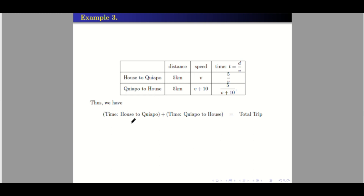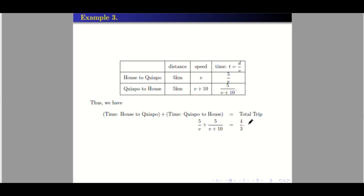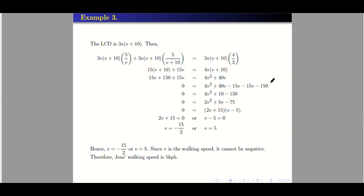Thus, the time from house to Quiapo plus the time from Quiapo to house equals the total trip time. So we have: 5 over V plus 5 over (V plus 10) equals 4/3. The LCD is 3, V, and (V plus 10) since all are distinct and non-factorable. Distributing the LCD to each fraction: we can cancel V in the first term to get 5 times 3 equals 15, times (V plus 10). Cancel (V plus 10) in the second term to get 5 times 3 equals 15V. On the right side, cancel the 3 to get 4 times V times (V plus 10), which equals 4V(V plus 10).